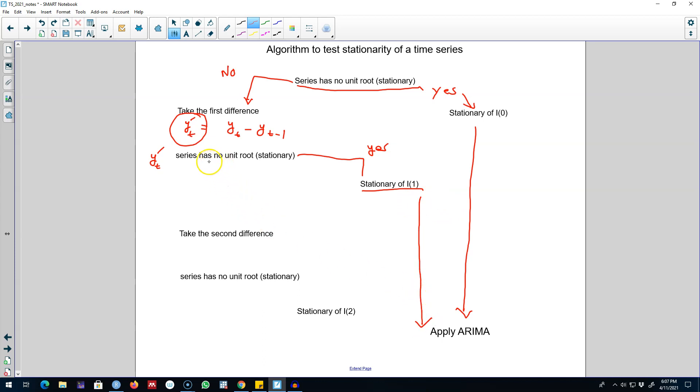On the other hand, if our answer is no, the series is not still stationary, then we may need to take the second difference of this series. That is, we may need to calculate yt double prime by calculating the difference in the differenced series.